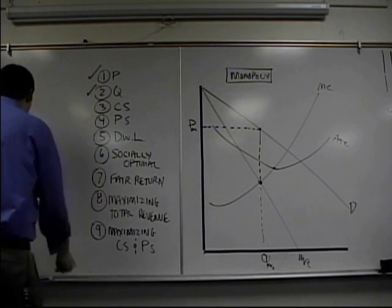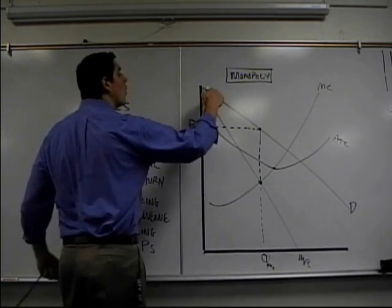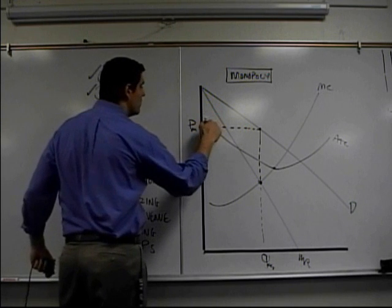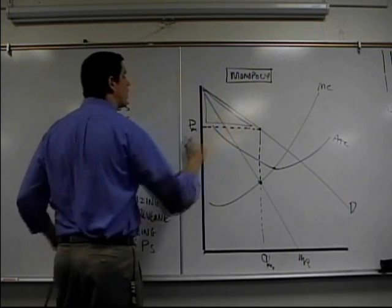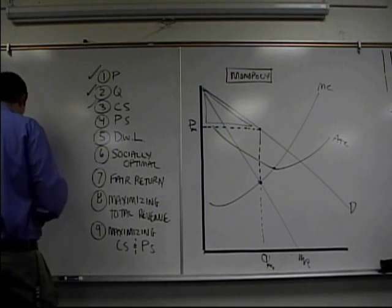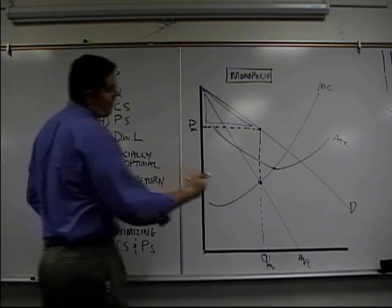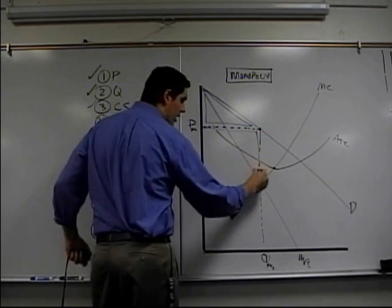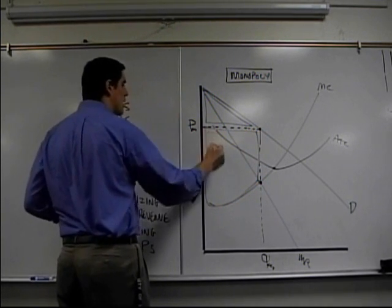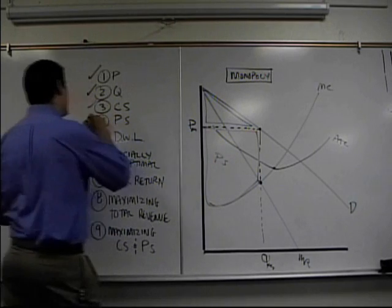Consumer surplus we showed on another video. Consumer surplus is what people were willing to pay for something and what they actually did pay for something. In this case, consumer surplus is this blue triangle sitting right there. Check three. Producer surplus is what a firm was willing to sell for and what they did sell for. Right here, monopoly, it looks just like that. Producer surplus, check four.